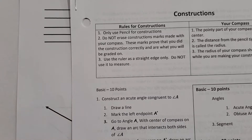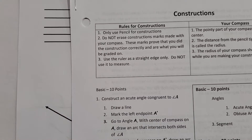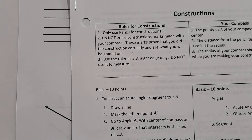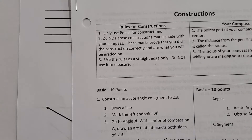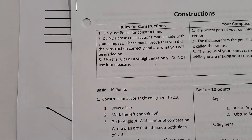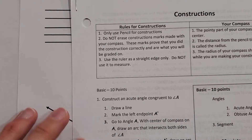Greetings, M Squared here. Today we are going to do a few more constructions. We are going to do a perpendicular bisector, and along with that I'm going to show you how to construct a 45 degree angle without a protractor. Normally we would use a protractor, so we're going to do a perpendicular bisector and construct a 45 degree angle. All right, here we go.